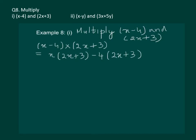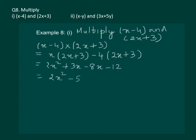Now let us solve it further. x into 2x gives us 2x square, plus x into 3 gives us 3x. Minus 4 into 2x gives us minus 8x. Minus 4 into plus 3 gives us minus 12. We notice we have two like terms, 3x and 8x, so combining them we get 2x square minus 5x minus 12. That is the required answer.